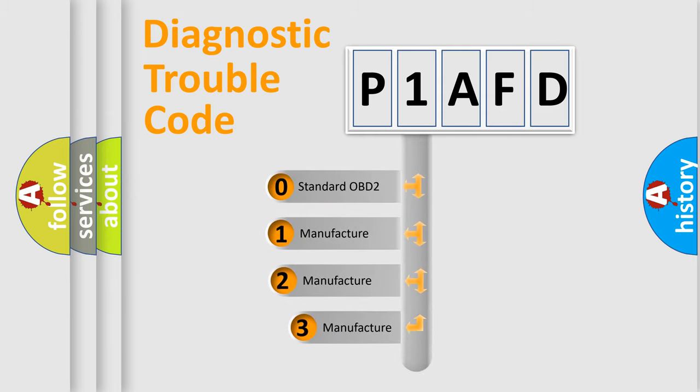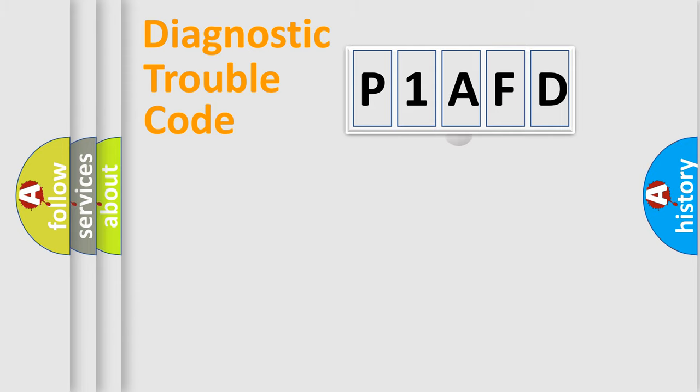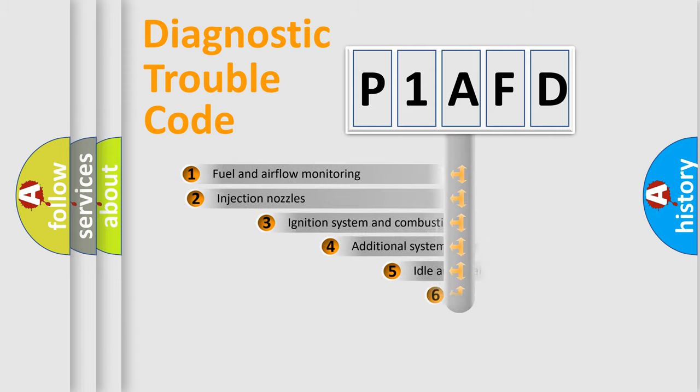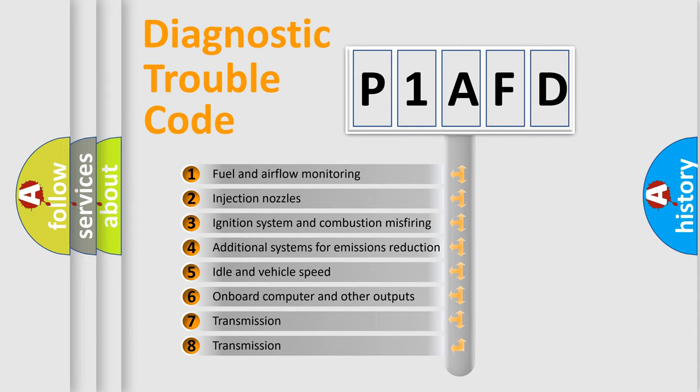If the second character is expressed as zero, it is a standardized error. In the case of numbers 1, 2, or 3, it is a more precise expression of the car-specific error. The third character specifies a subset of errors.